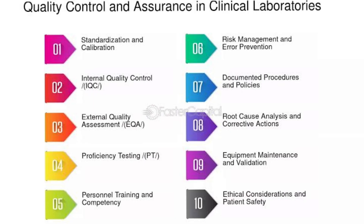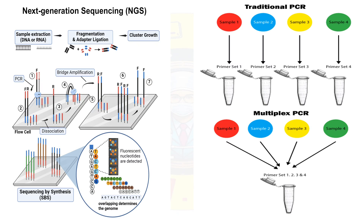Ensuring diagnostic accuracy involves strict adherence to quality control measures, including the use of appropriate controls in each assay, regular calibration and maintenance of equipment, and thorough validation of diagnostic protocols. Proficiency testing and participation in external quality assessment schemes are essential for maintaining high standards. Emerging diagnostic technologies such as next-generation sequencing and multiplex PCR panels are revolutionizing viral diagnostics. Next-generation sequencing allows comprehensive genomic analysis, identifying not only HMPV but also co-infections and potential mutations. Multiplex PCR panels can simultaneously detect multiple respiratory pathogens, streamlining the diagnostic process.